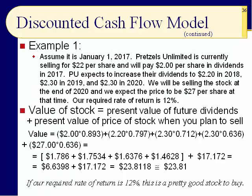Slide 36: here's an example. Let's assume it's January 1st, 2017. Pretzels Unlimited (symbol PU) is currently selling for $22 per share, paying $2 per share in dividends in 2017. We expect dividends of $2.20 in 2018, $2.30 in 2019, and $2.30 in 2020. We're thinking of selling the stock at the end of 2020, expecting the price to be $27 per share. Our required rate of return is 12 percent.